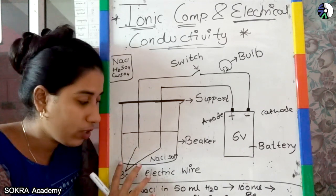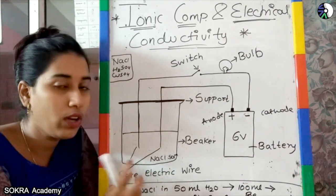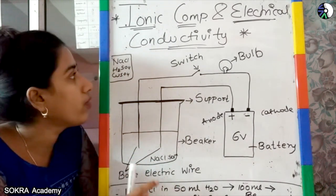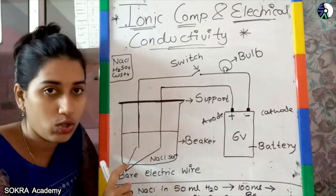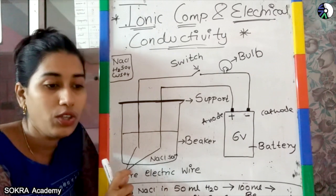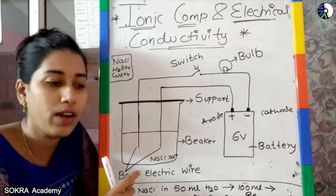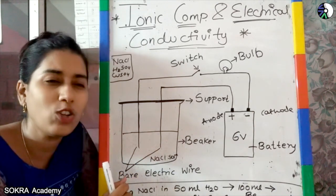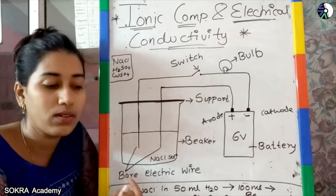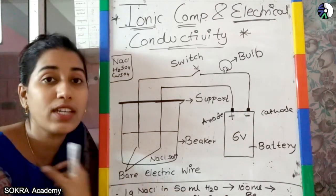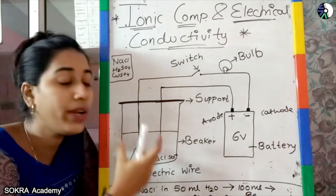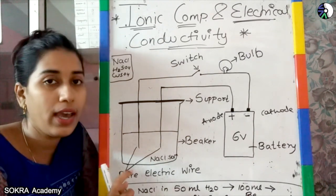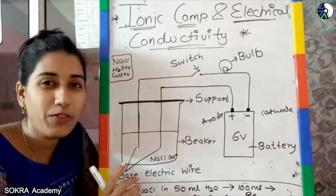We are making sure whether our bulb will glow or not. For that, we have taken NaCl first. Next we can take sulfuric acid H2SO4, copper sulfate CuSO4, and urea. We have taken 1 gram of each — sodium chloride, sulfuric acid, and others. You can take anything. We need to know which is our conducting liquid solution.